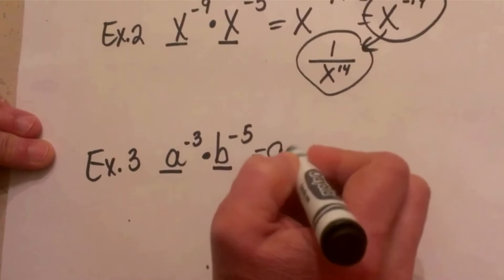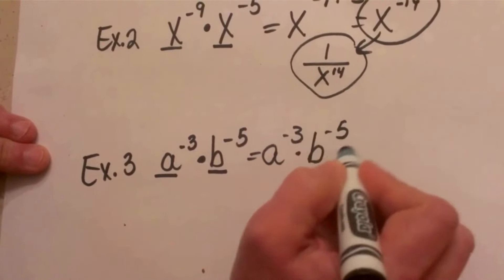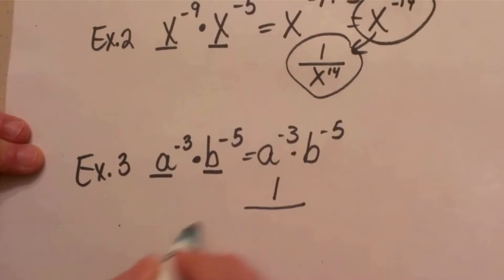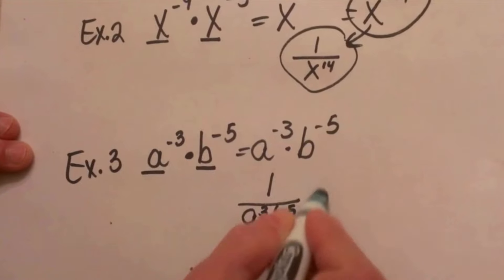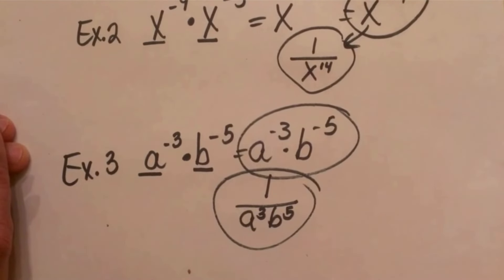So you would just leave it as a to the negative 3rd times b to the negative 5th, or if you wanted to write it with positive exponents, it would be 1 over a cubed b to the 5th. That's how you handle negative exponents.